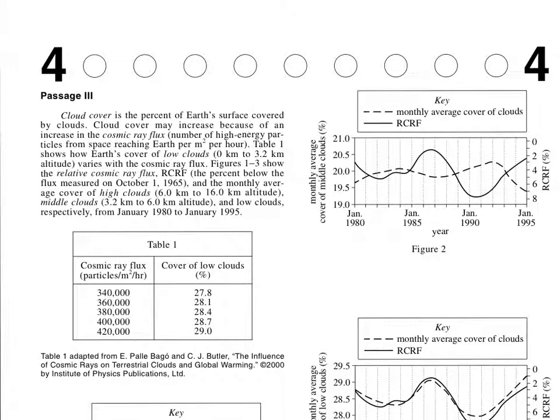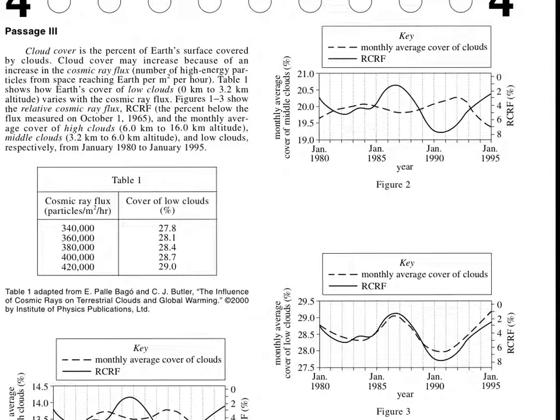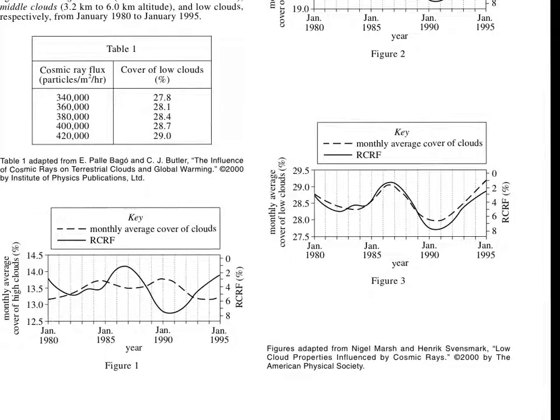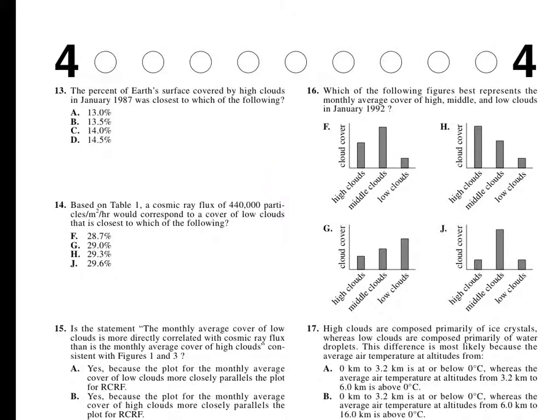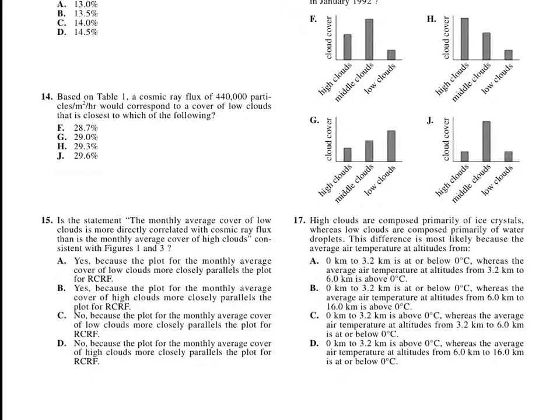Let's look at what cosmic ray flux is. Relative cosmic ray flux, or RCRF, is what cosmic ray flux is. And we're going to look for low clouds or high clouds. So obviously, the low clouds is very similar, pretty much the same line, while the high clouds is almost opposite. So I'm going to say the low clouds is. And it says, the monthly average cover of low clouds is more directly correlated with cosmic ray flux. And so that would be correct. The statement's correct. So we can already rule out C and D.